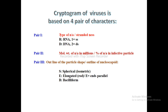The cryptogram of viruses is based on 4 pairs of characters. You can say that there are 4 parts of that key or cryptogram. It has 4 pairs — Pair 1, Pair 2, Pair 3, and Pair 4 — that describe the characteristics of that particular virus.